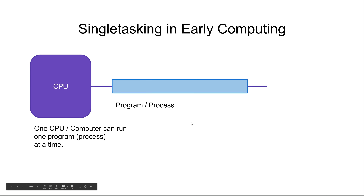In the early days of computing, a computer could only run one program or process — as programs are also sometimes referred to — at a time, only one at a time. So in that case, if you were working inside of Word or something similar, and you needed to make some changes inside Excel, you would have to close Word, jump into Excel, make your changes, close Excel, and then open Word again. That kind of workflow quickly becomes quite annoying for the user.